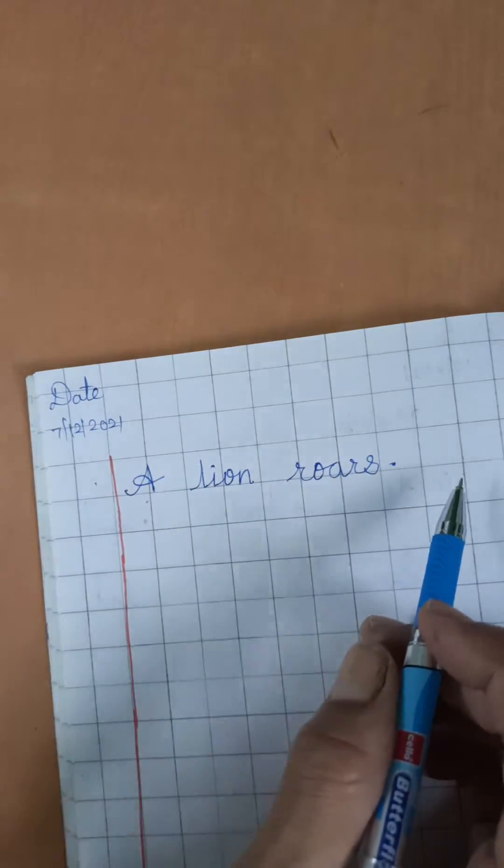Okay, like this you have to write in your EVS notebook red and blue line. You have to write in your EVS notebook. Okay children, while writing say loudly and write it properly. Okay bye.